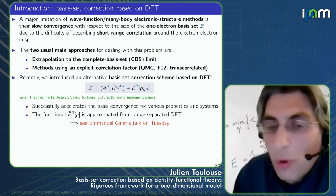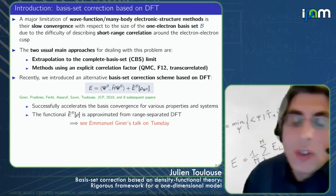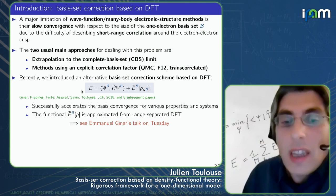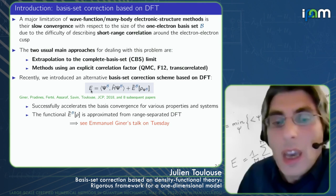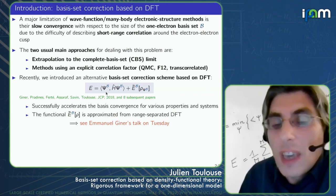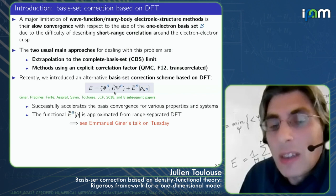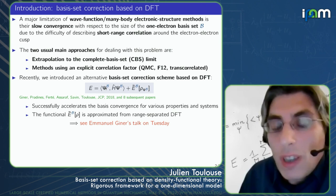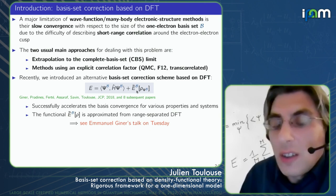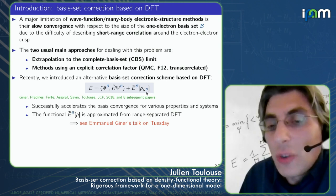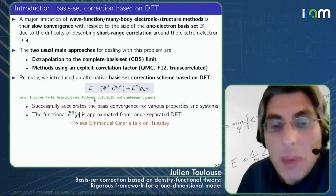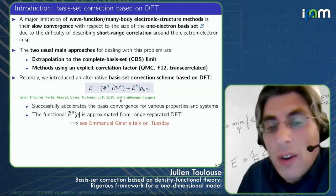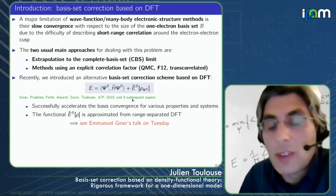Recently, we introduced an alternative way of correcting for basis set incompleteness using DFT. The idea is quite simple and can be summarized in one equation. You compute the expectation value of your Hamiltonian over a wave function expanded within a finite basis set B, and you correct for what is missing in the basis set using a functional of the density, which I call E-bar-B. This was introduced in a 2018 paper, and we developed this approach extensively in eight subsequent works.